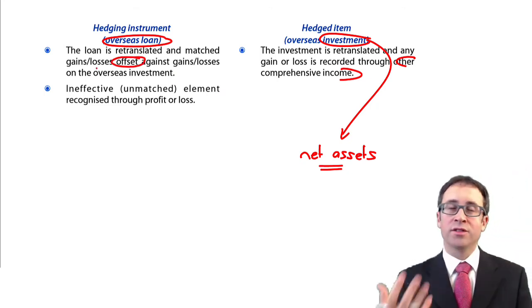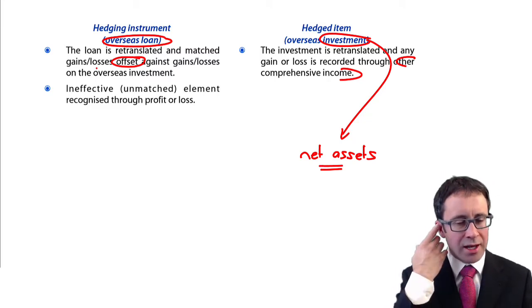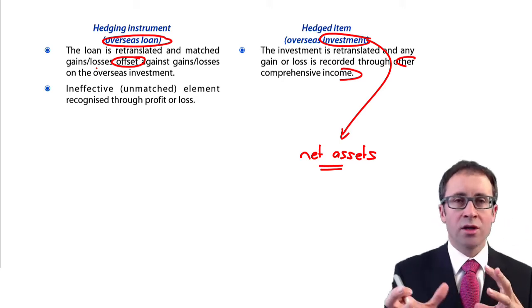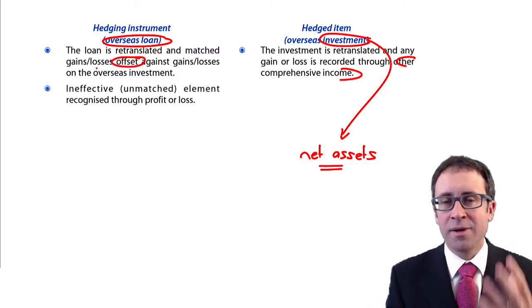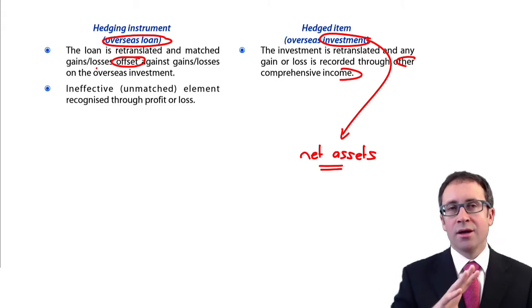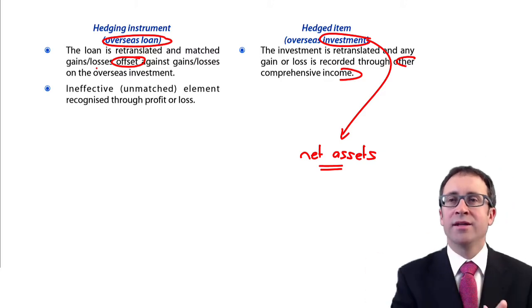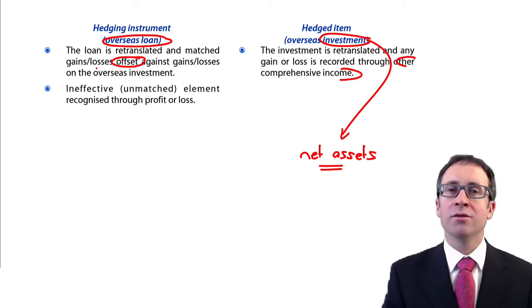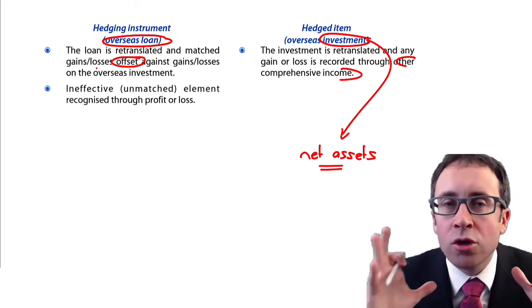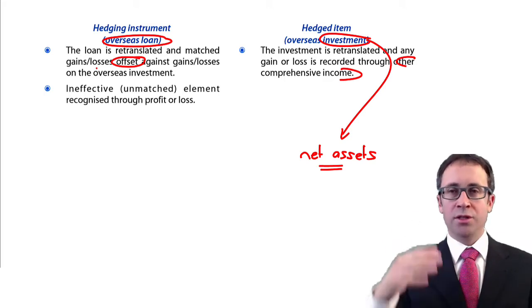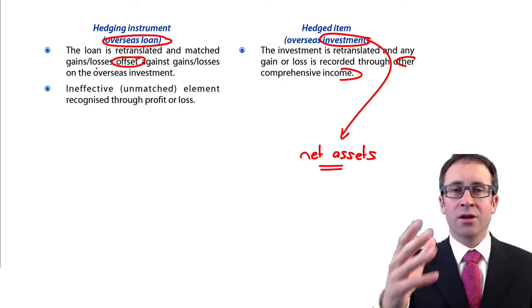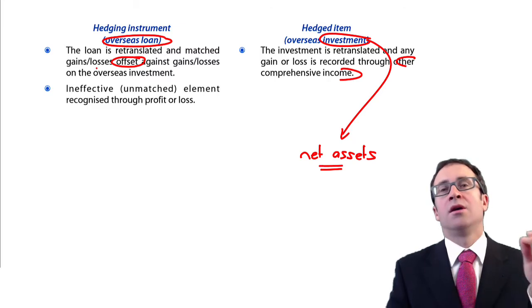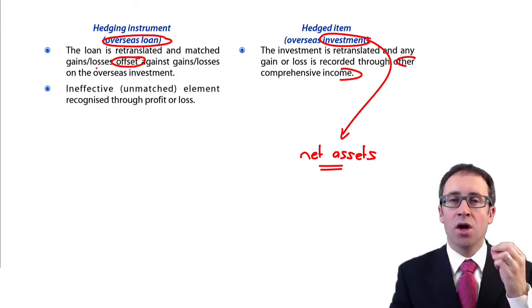They're offset in other comprehensive income to match them off. Just be aware there's a tricky element relating to ineffective portions, because the gains and losses might not equally offset. We need to ensure we fall within the rules specified by your financial instrument standards — where the gain or loss is not 100% effective, some of those differences can get taken to profit or loss. The key bit is: you have an overseas subsidiary whose net assets need to be translated at the closing rate every year, generating gains or losses. To mitigate those, you take out a hedging instrument — an overseas loan.